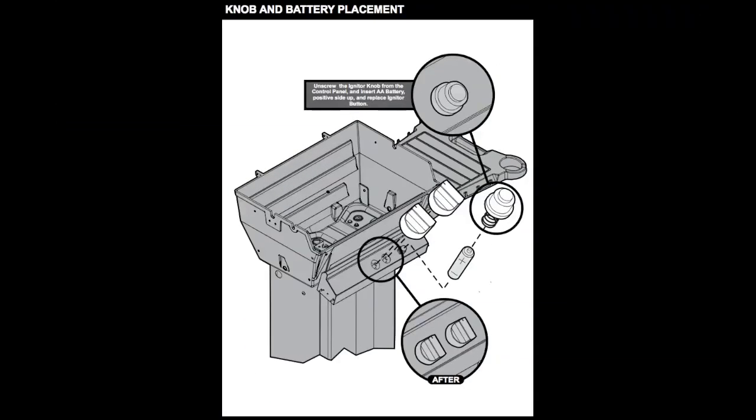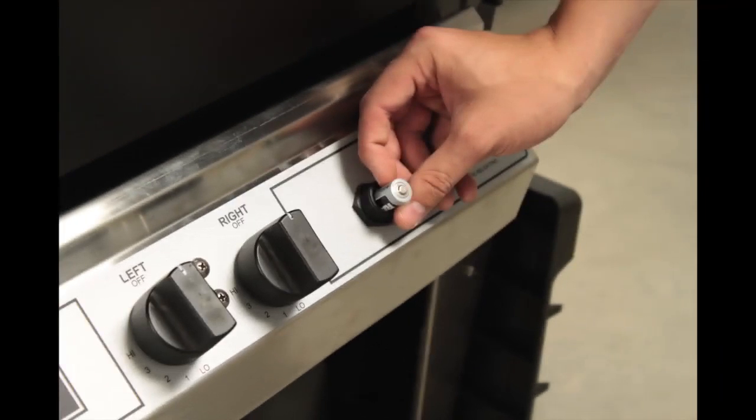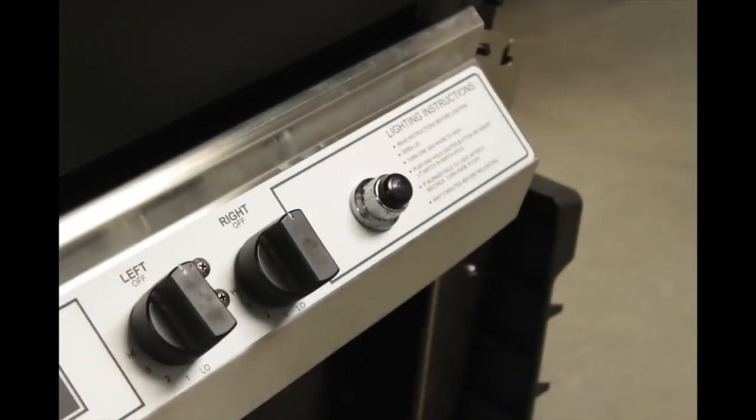Unscrew the top from the igniter button and insert the AA battery with the positive end up. Replace the igniter button and press it. You should hear a rapid ticking that indicates it's working.